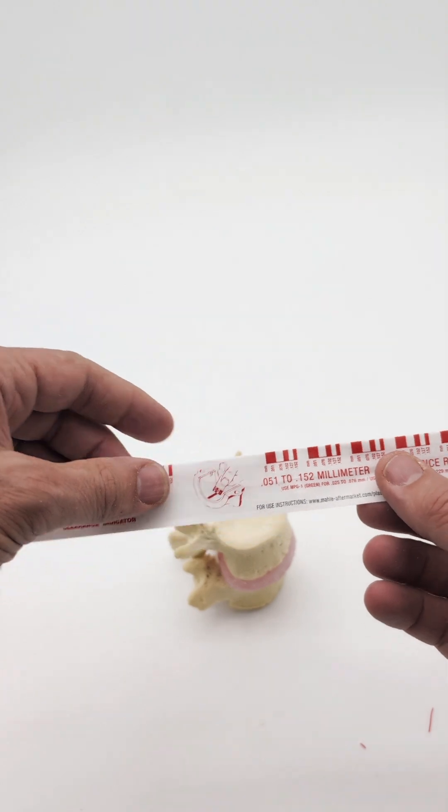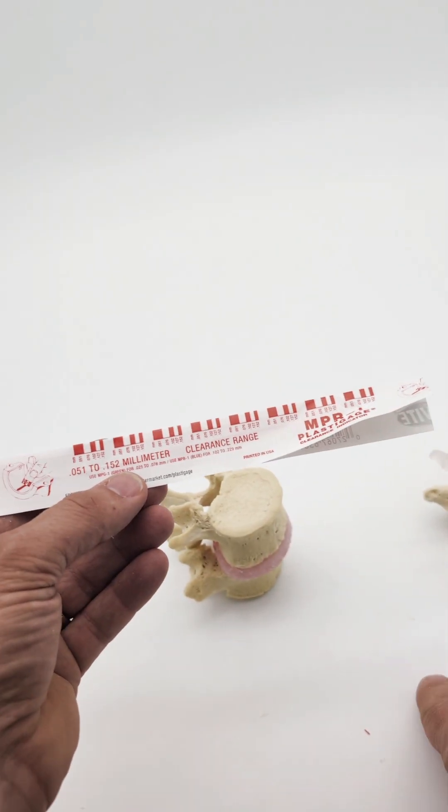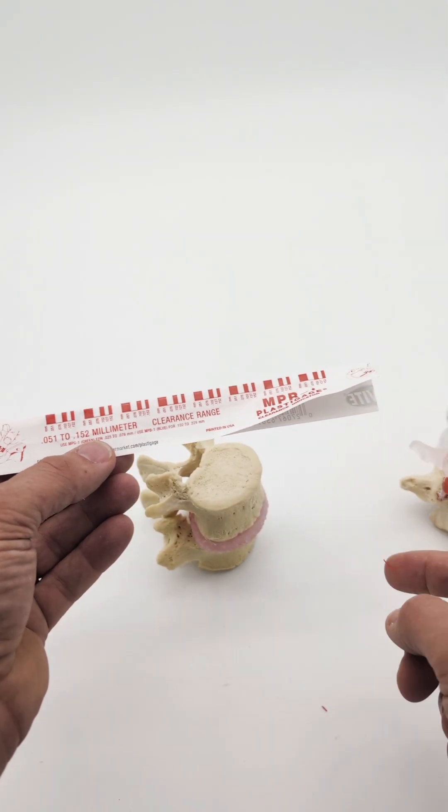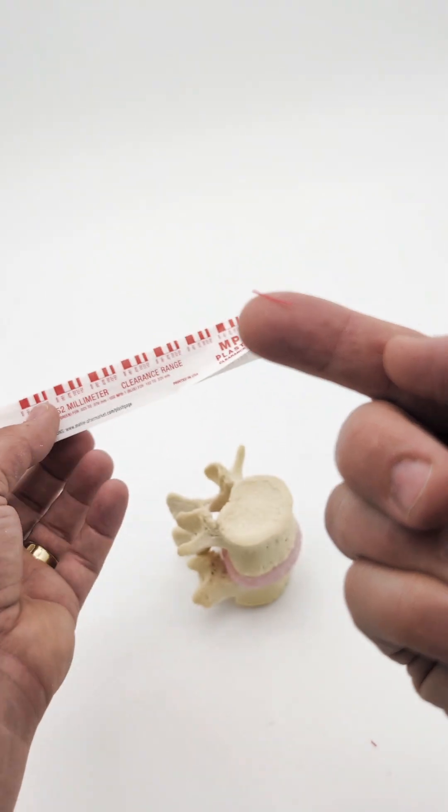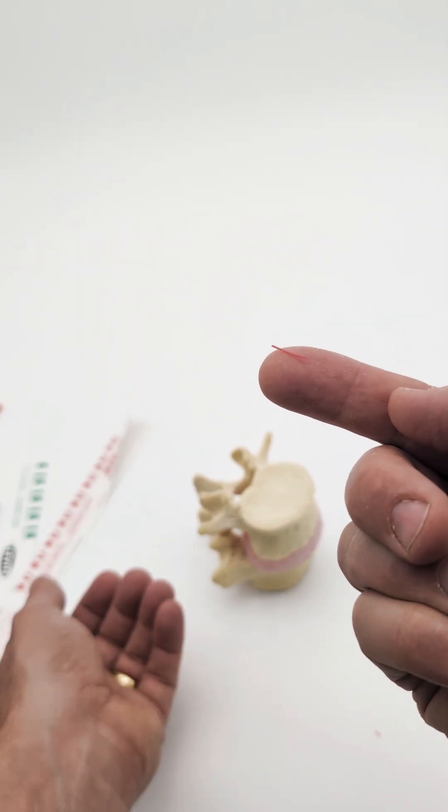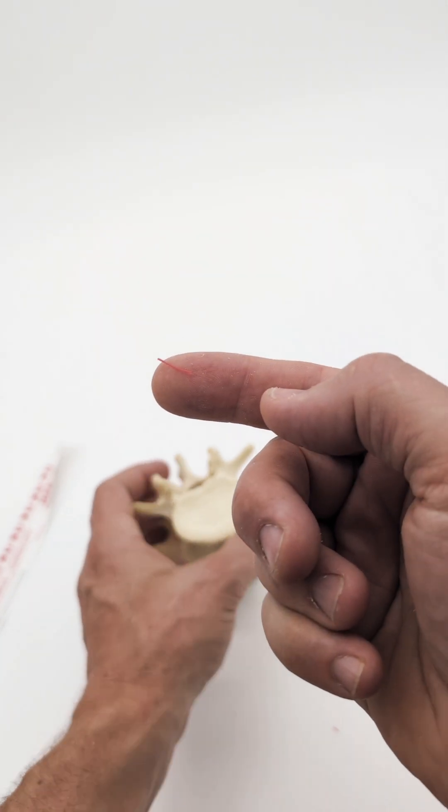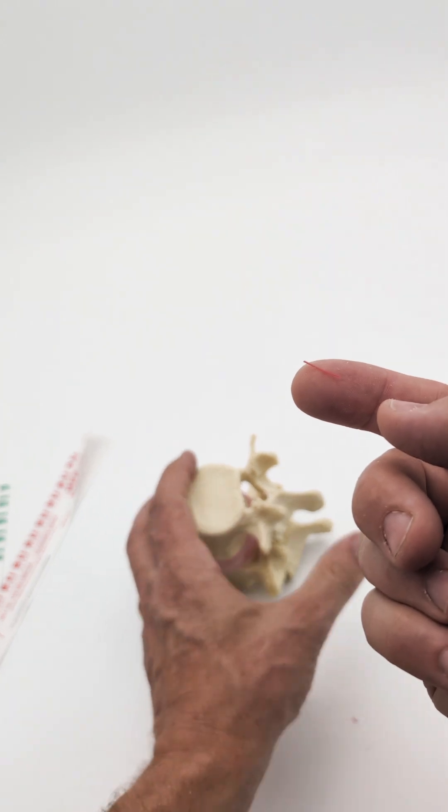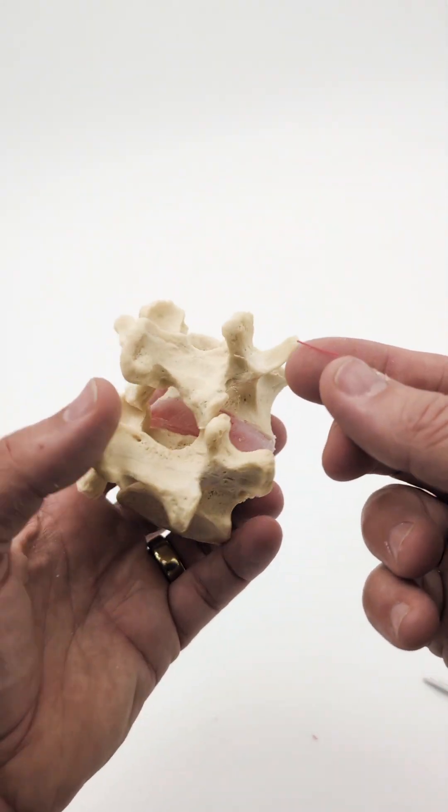So for a demonstration here, this is plastic gauge, which is small round plastic that's used for engine rebuilds, checking the gap between two metal structures. I'm going to put this piece of plastic gauge in the facet joint just like that.